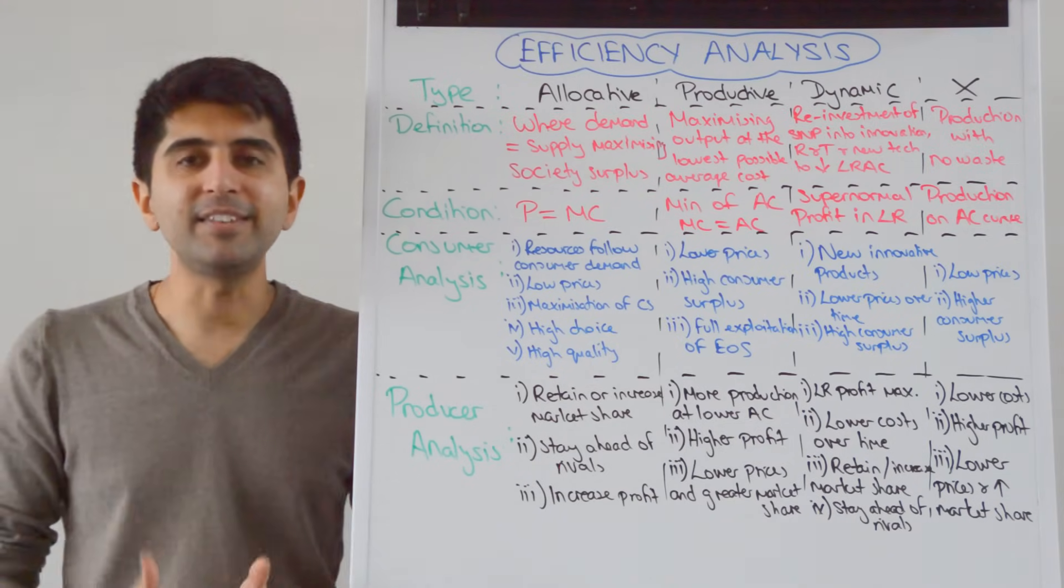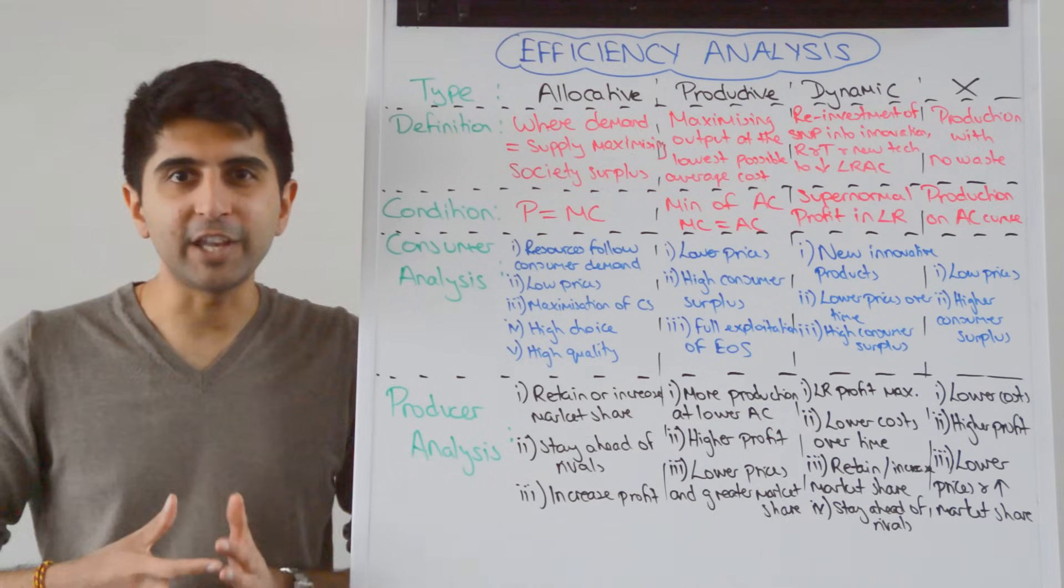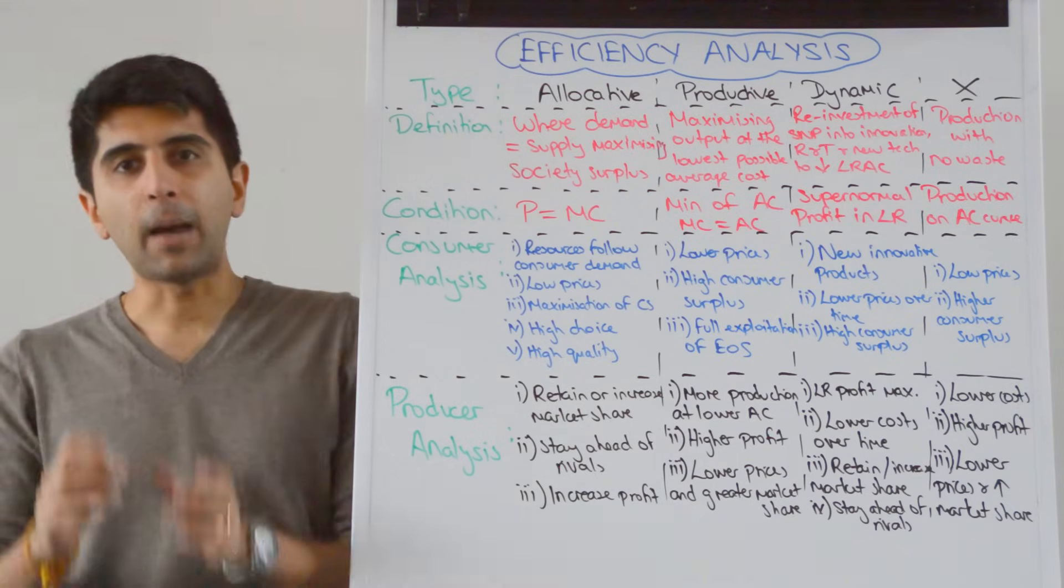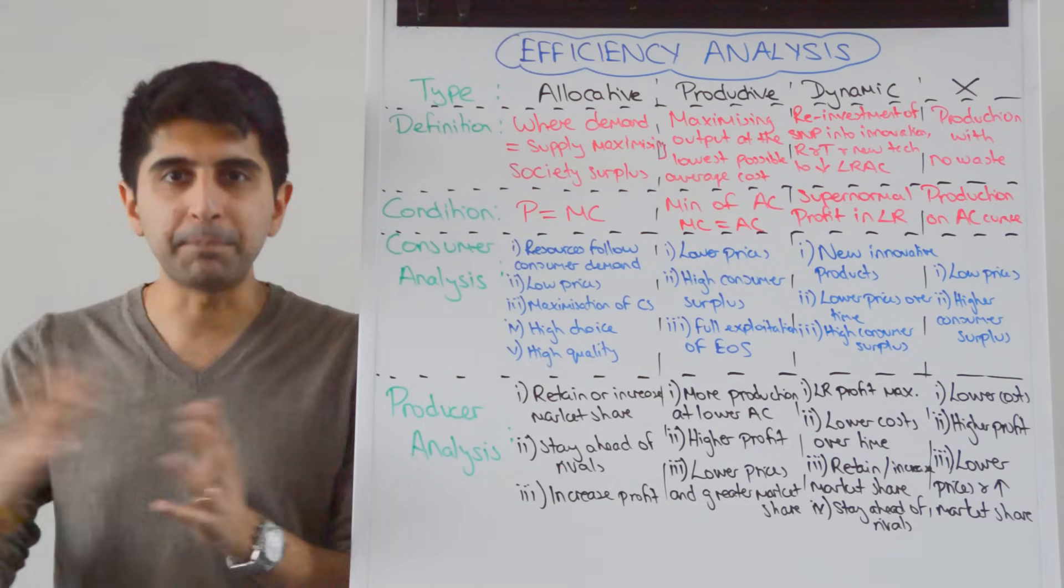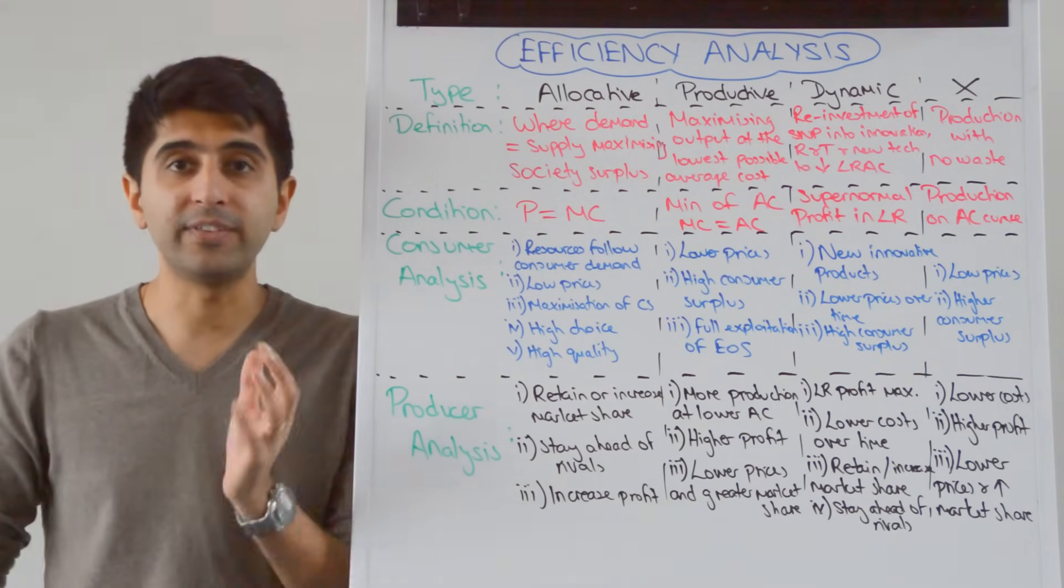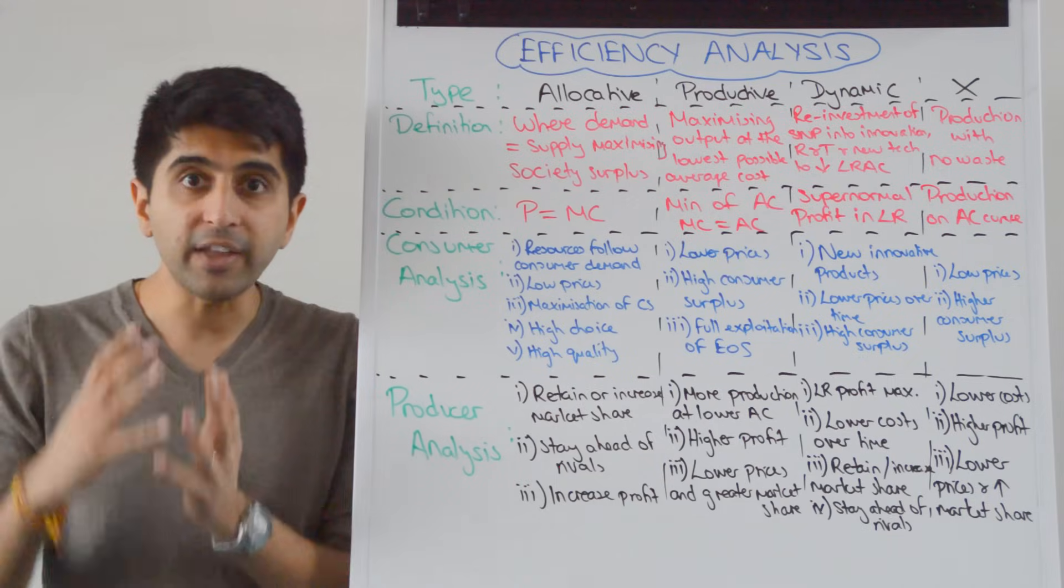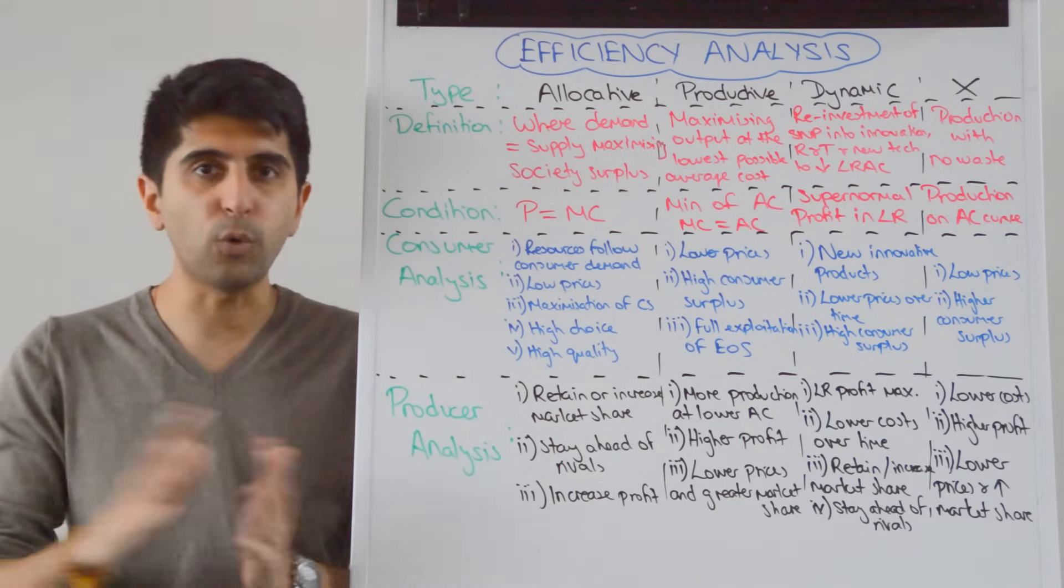Hi everybody! You got the basics of the four main efficiencies from my previous video, but in this video we're going to go uber detailed. When it comes to writing an essay, for you guys to rock the essay and get big marks, how do you actually analyze what happens when these efficiencies take place? Why are they good for consumers? Why are they good for producers? We are going to understand all of that in this video.